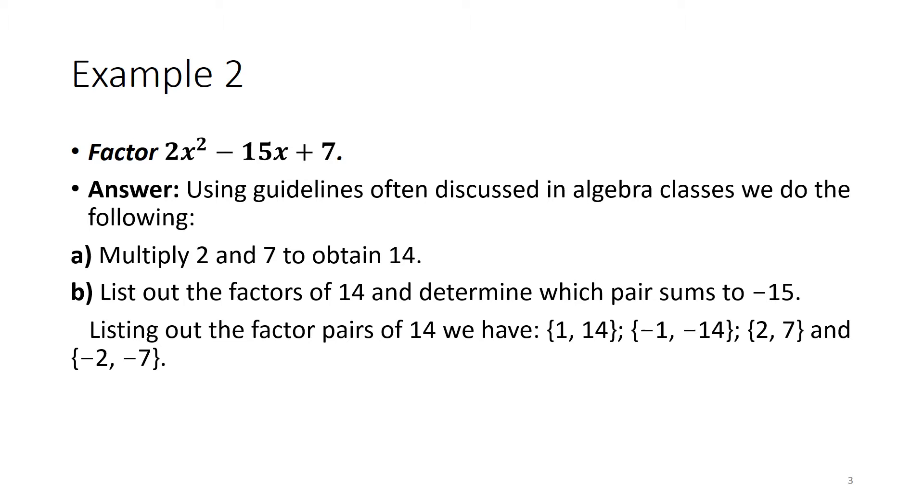Listing out the factor pairs of 14, we have 1 and 14, negative 1 and negative 14, 2 and 7, and finally negative 2 and negative 7.